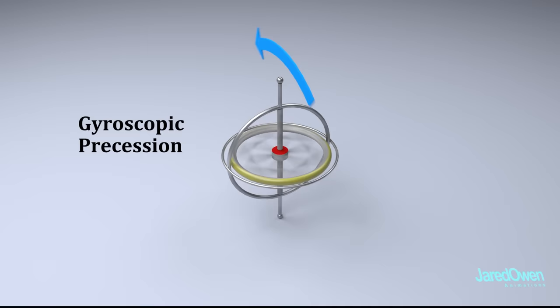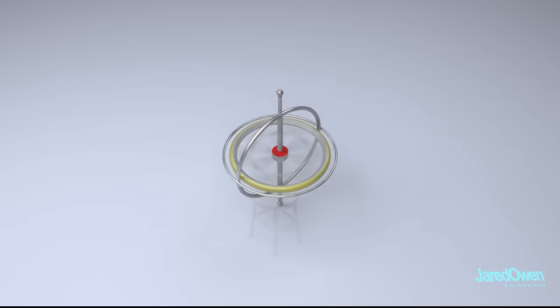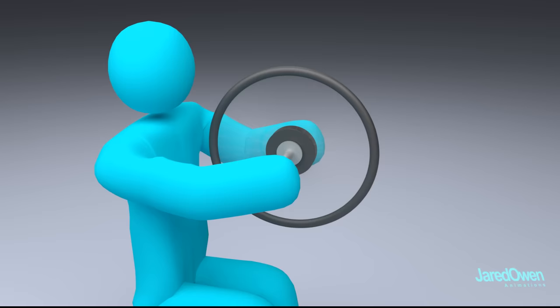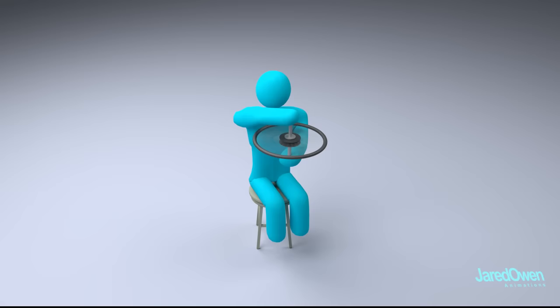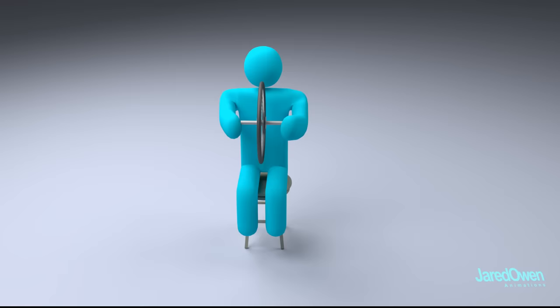This is best demonstrated with another experiment. Here's a chair that can spin freely. Now we have a person sitting in the chair holding a spinning gyroscope. In this case, it's a bike tire, but this experiment will work with just about any rotating object. If the person turns the gyroscope, they will start to spin slowly in the chair. That is, by applying a torque to the gyroscope, the resultant force spins the chair.